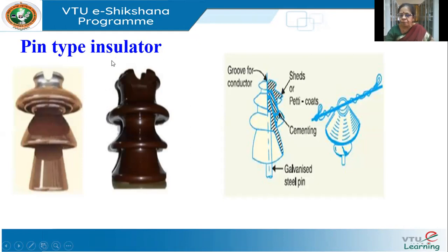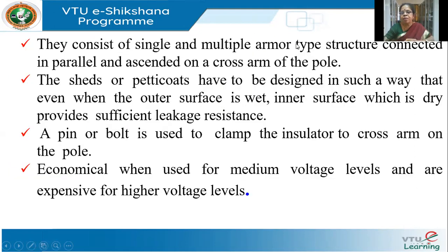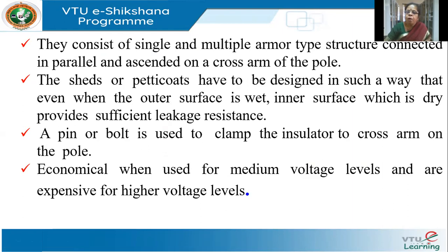When it rains, the water will fall on the insulator and slide off, keeping the inner surface dry even though the outer surface is wet. If everything gets wet, it may reduce the leakage resistance. So this design ensures that the leakage resistance is sufficient to prevent any leakage currents. It is called a pin type because there is a pin or bolt used to clamp the insulator to the cross arm of the pole.